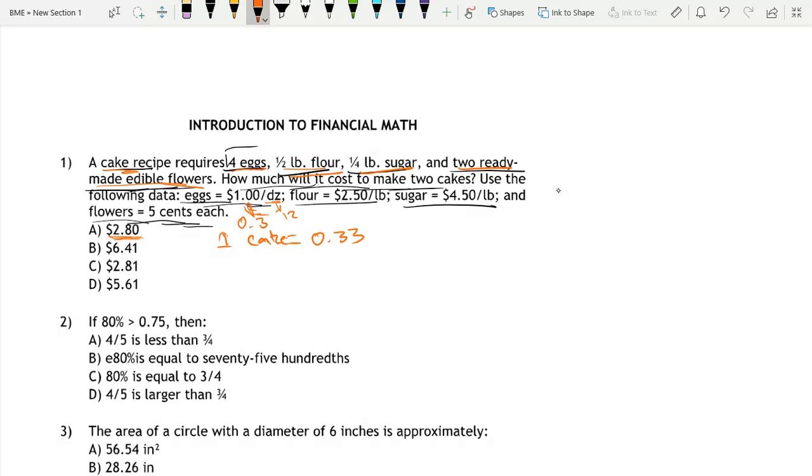And then half pound flour. Flour is $2.50 per pound, meaning half a pound is $1.25, which is 2.5 divided by 2. One fourth pound sugar. Sugar is $4.50 per pound, so one fourth pound is 4.5 over 4, so that's $1.125.